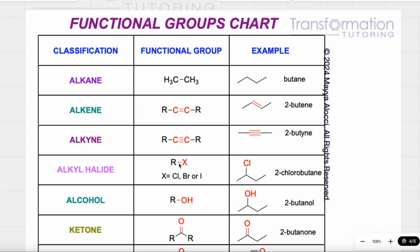We can also have a halogen attached to our molecule. Halogens are elements in group 17 of the periodic table, such as chlorine, bromine, or iodine. If you see any of these, the compound is called an alkyl halide. For example, this molecule is 2-chlorobutane, where our functional group is chlorine.